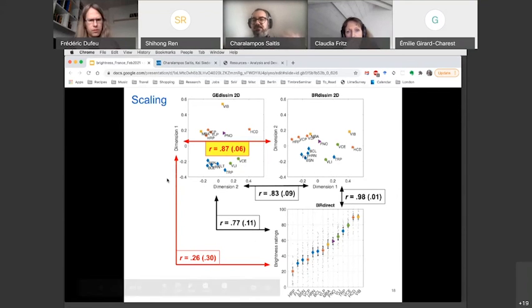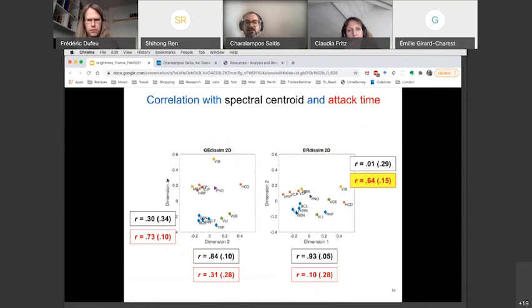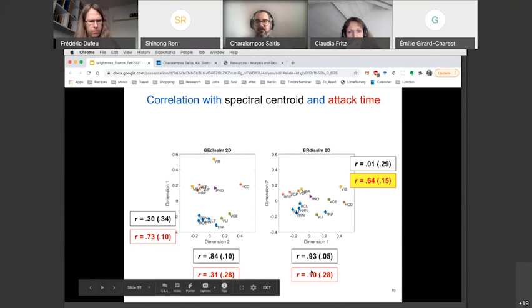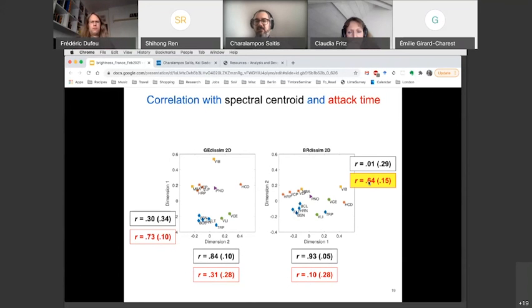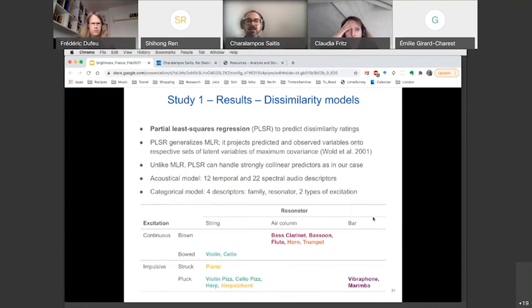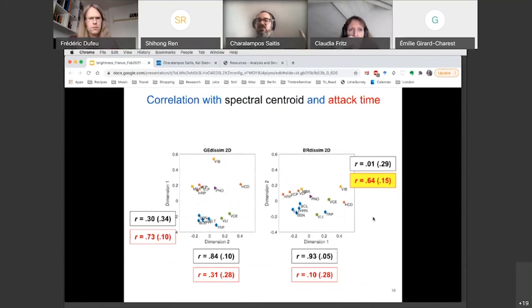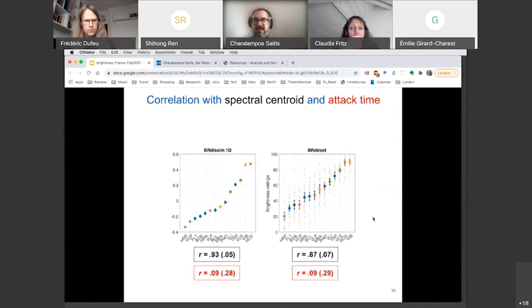And we looked at correlations with spectral centroid and attack time, and we had the usual results here. But for the second dimension of brightness dissimilarity, we did have a significant correlation with attack time. What this might imply is that there was some sort of leakage from general dissimilarity to brightness dissimilarity, or maybe there is something about temporal cues in brightness perception. Because we used, because we asked half of the subjects to do first brightness dissimilarity and then general dissimilarity and vice versa, we looked at the data and we ruled out any sort of influence of the order of the task.